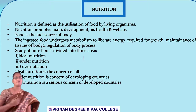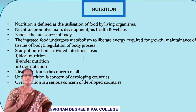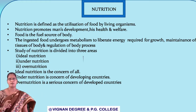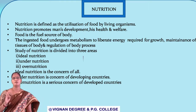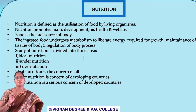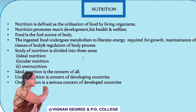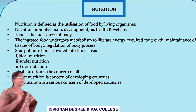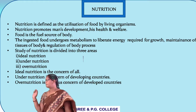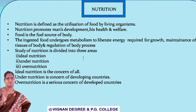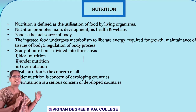The study of nutrition is generally divided into three areas. First is ideal nutrition. Second is under nutrition. Third is over nutrition. Ideal nutrition is nothing but a balanced diet, and it is a concern to all of us. Under nutrition is mainly concerned with under-development factors.